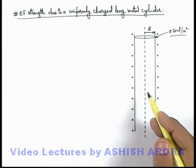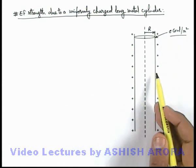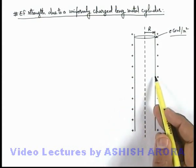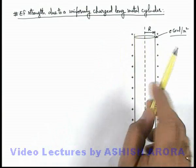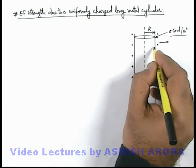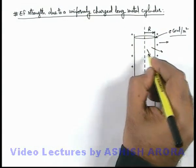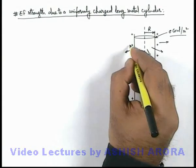As we have already studied that in case of metal bodies charge only resides on the outer surface. But as the charge is symmetrically distributed on the outer surface, the electric field which is originated from this metal cylinder will be in radially outward direction.